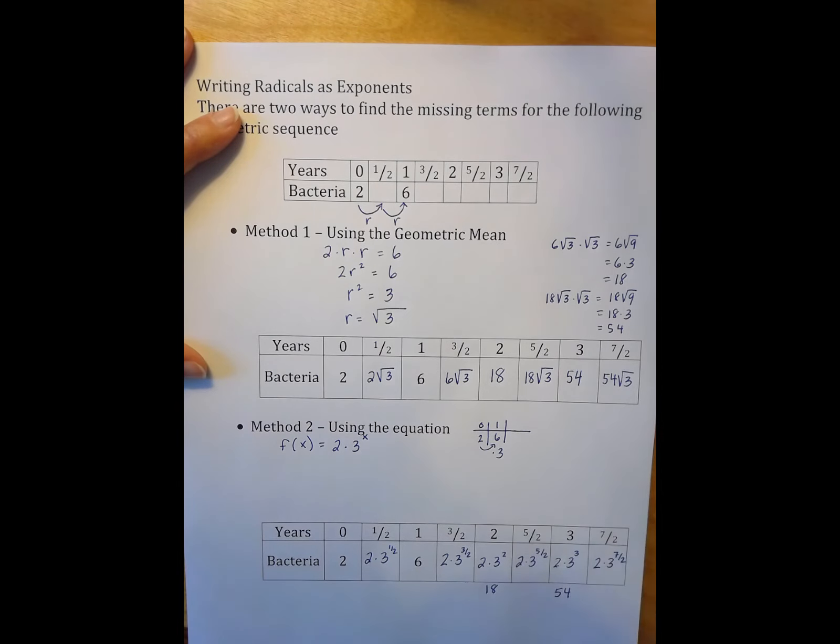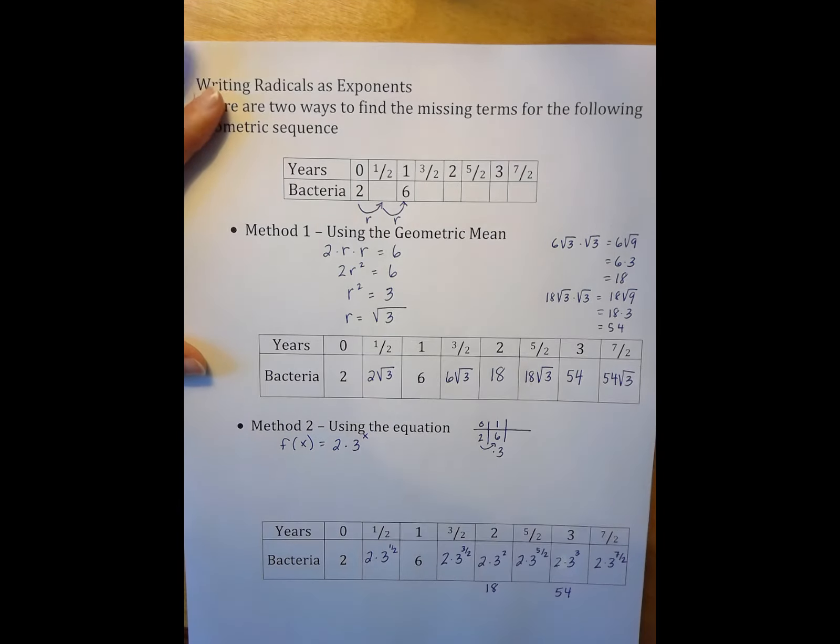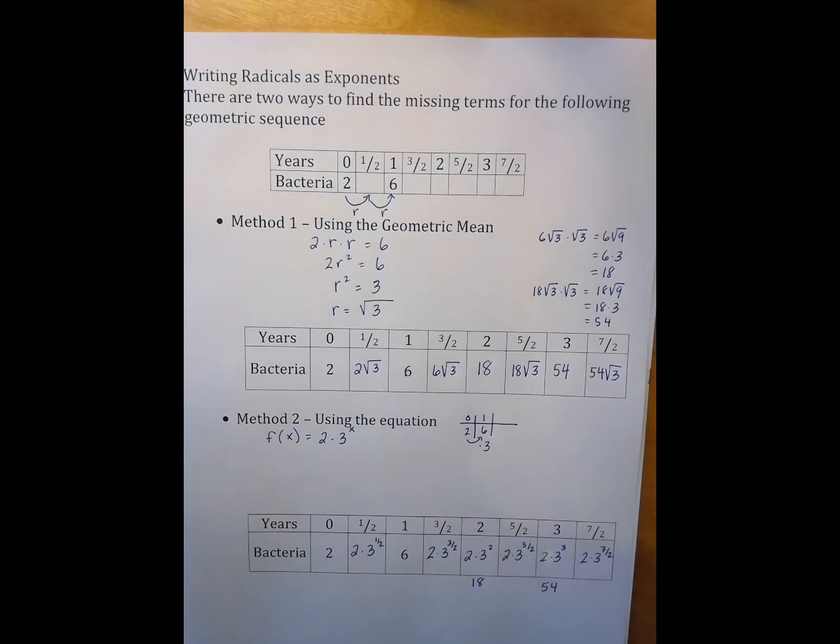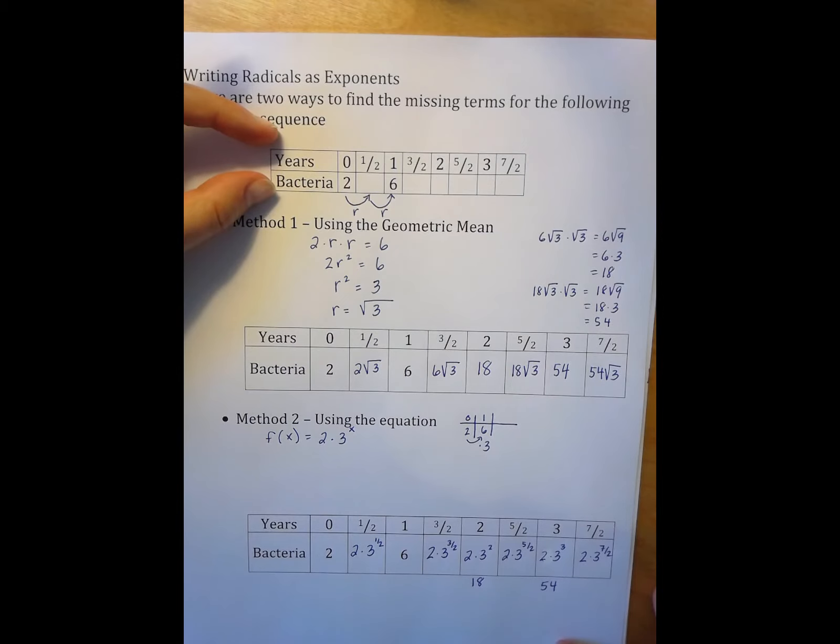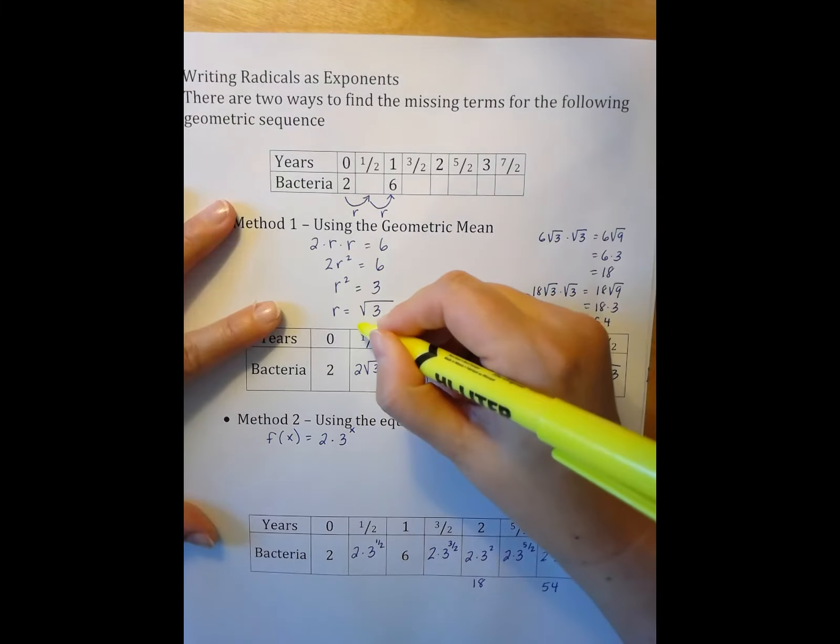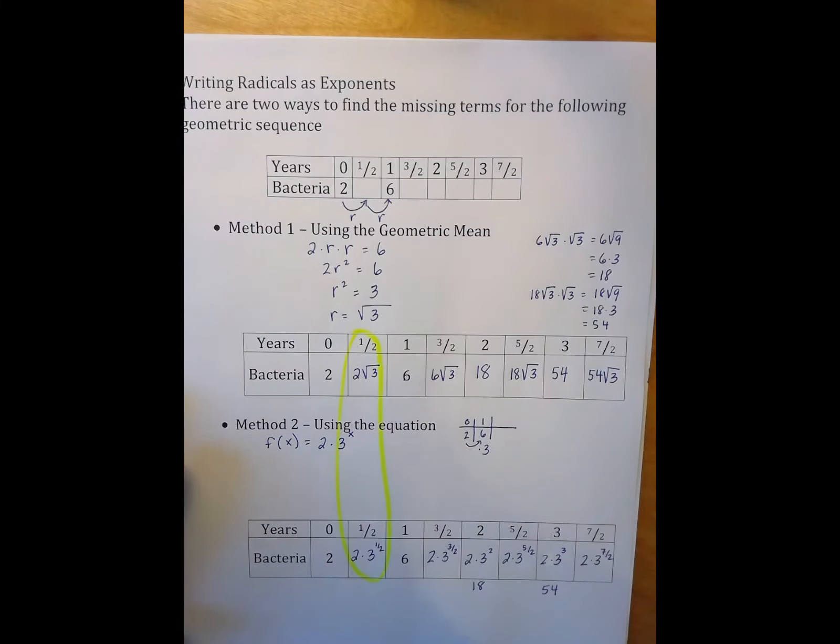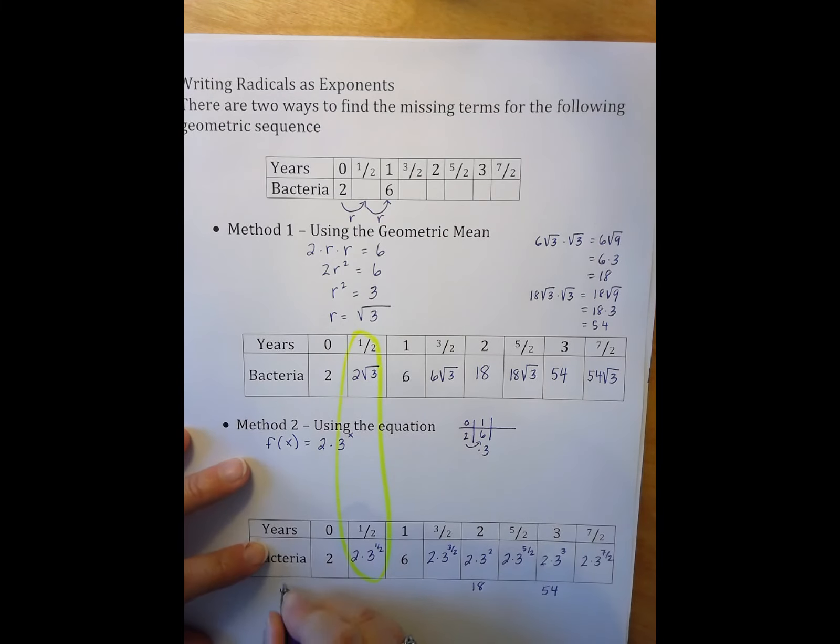Now there are ways to simplify these powers that we haven't talked about yet. But if I look above, in order for these tables to be the same, which they should be since I'm using the original information, it turns out that these two must be the same, which means the square root of 3 must equal 3 to the 1/2 power.